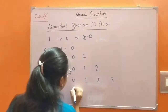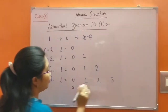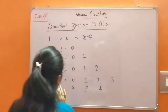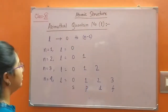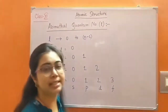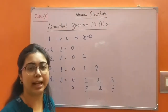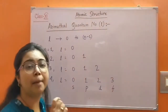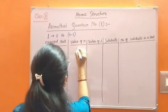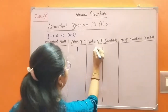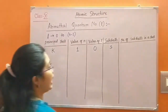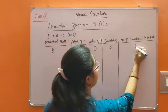For L equals 0, it is S subshell; for L equals 1, P subshell; for L equals 2, D subshell; and for L equals 3, F subshell. These values of L, that is azimuthal quantum number, determine the sub-shells in which the electron lies. L also signifies the number of sub-shells. For K shell, N equals 1, L equals 0, and the sub-shell is S. Number of sub-shells in the K shell is 1.